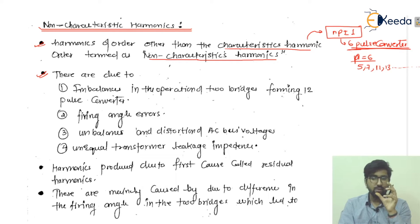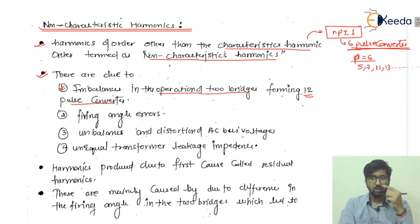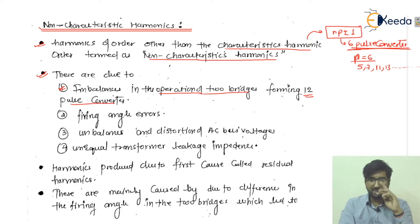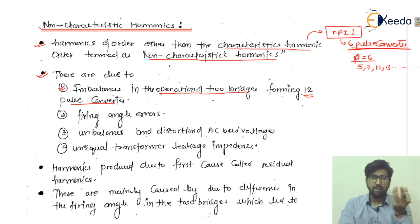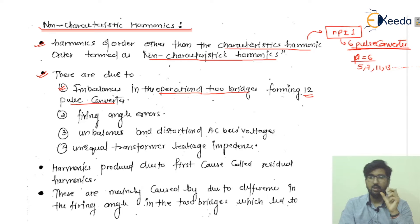The first cause is imbalances in the operation of the two bridges forming a 12-pulse converter. In a 12-pulse converter, we have a six-pulse thyristor bridge on the upper side and another six-pulse converter on the lower side. If there is an imbalance between the two converters — due to current flow, voltage, or delay angle differences — or if there are connection issues, this can give rise to non-characteristic harmonics.